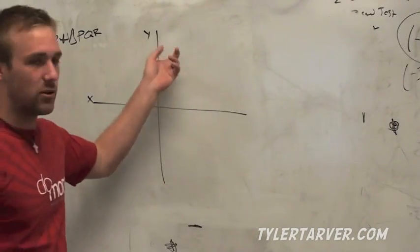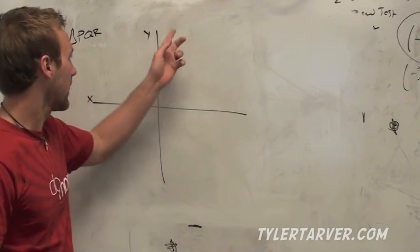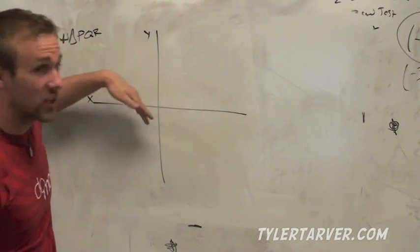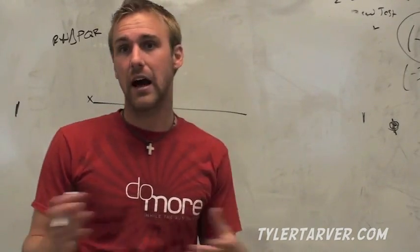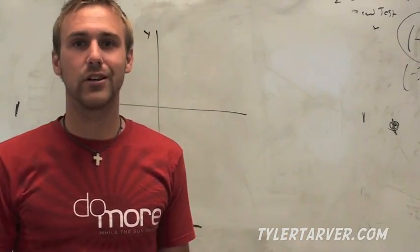Don't just be like eeny, meeny, miny, moe and you put it on there. Now, you're just going to plot it at the origin. It's easier to count boxes than to calculate distance. So just put it there and you can just count.